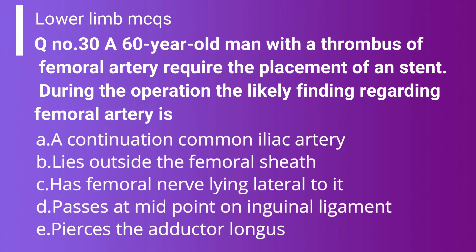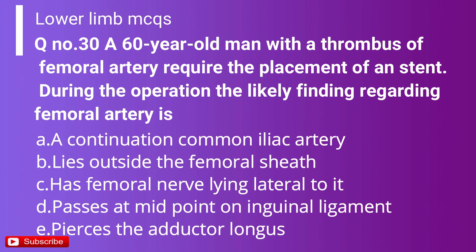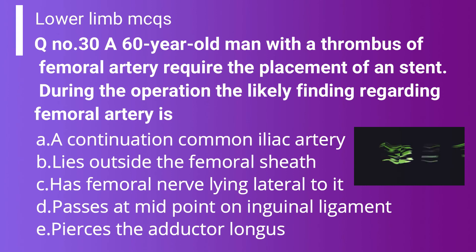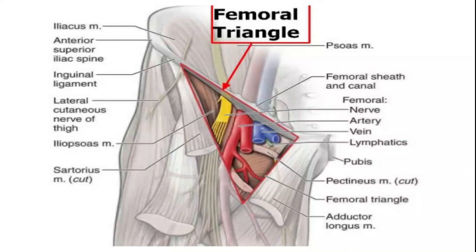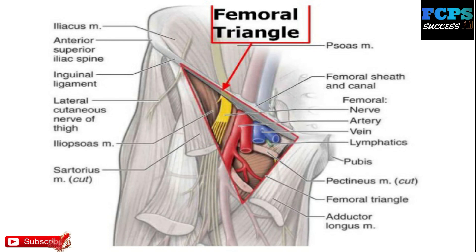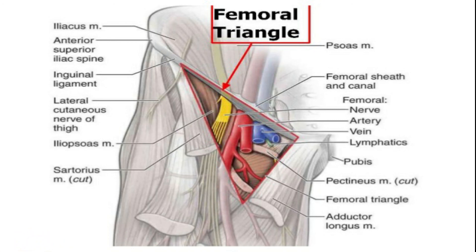Question 30: A 60-year-old man with a femoral artery thrombus requires stent placement. What is the likely finding regarding the femoral artery? Option A: Continuation of the common iliac artery. Option B: Lies outside the femoral sheath. Option C: Has the femoral nerve lying lateral to it. Option D: Passes at the midpoint of the inguinal ligament. Option E: Pierces the adductor longus. The correct answer is Option C — the femoral nerve lies lateral to the femoral artery. The other options are false: it is a continuation of the external iliac artery; it lies inside the femoral sheath; it passes at the midpoint between the anterior superior iliac spine and the symphysis pubis; and it pierces the adductor magnus, not adductor longus — known as the adductor hiatus.